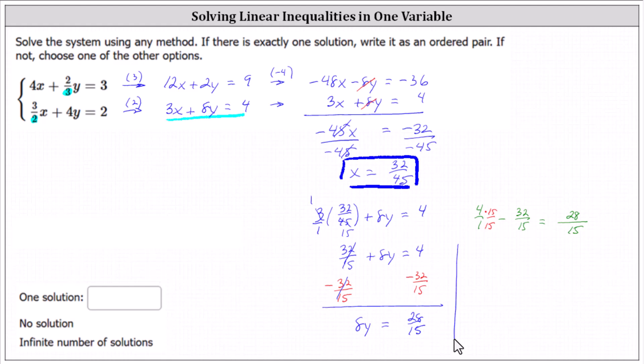We might be thinking we should divide both sides by 8 to solve for y, which is true, but because we have a fraction on the right, let's multiply both sides by 1/8. On the left, 1/8 times 8 is 1. One times y is y.